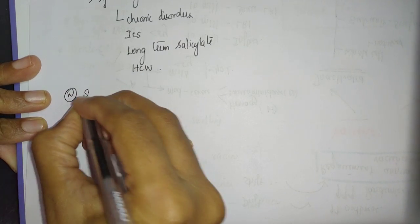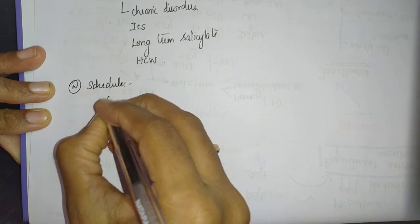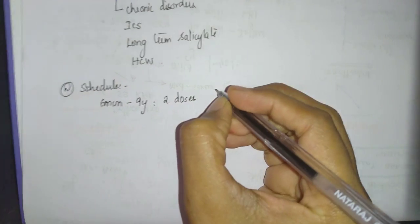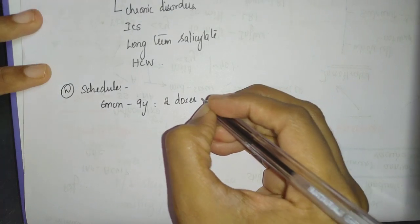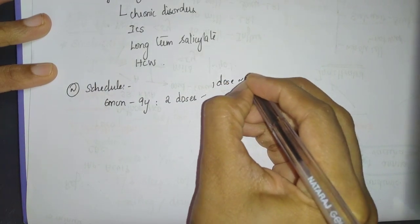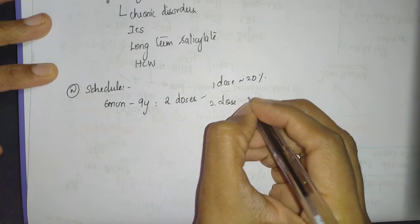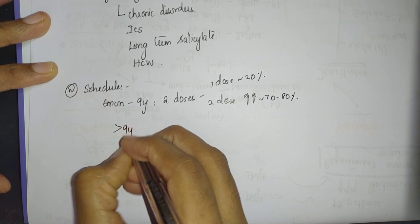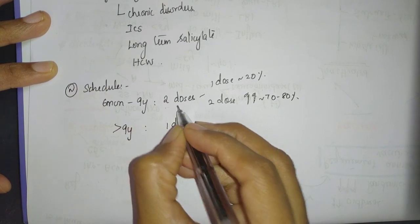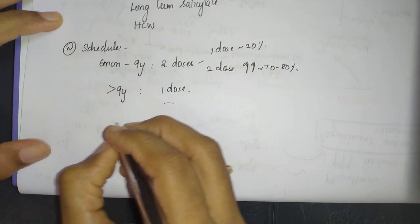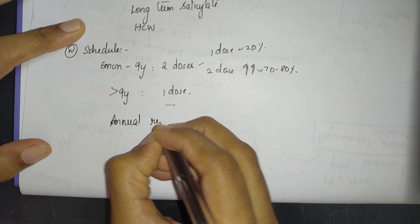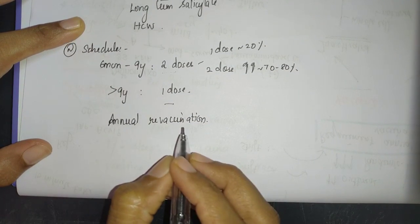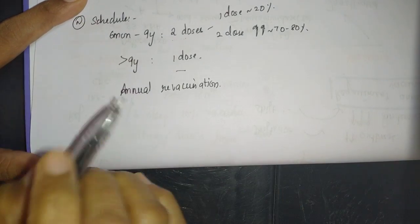Normal schedule: six months to nine years age group, two doses are important because single dose induces only 20% seroconversion, whereas two doses increased it up to 70-80%. More than nine years, a single dose. After this two-dose and one-dose, what are you going to do? Annual revaccination. Why? Because the strains keep changing, the vaccine keeps changing, so you need to keep the protection updated.